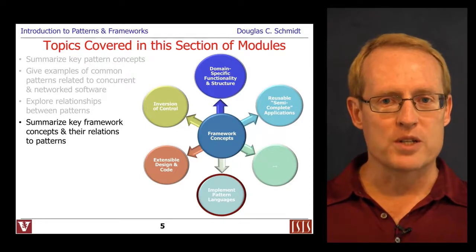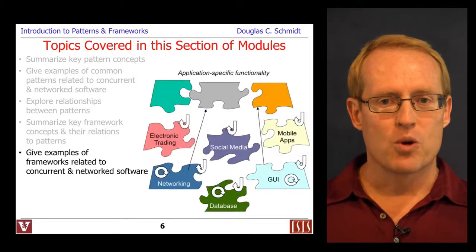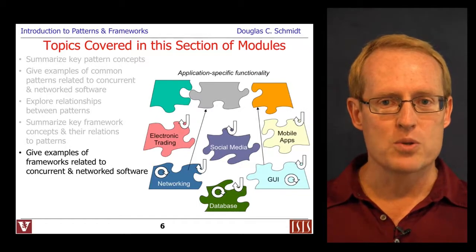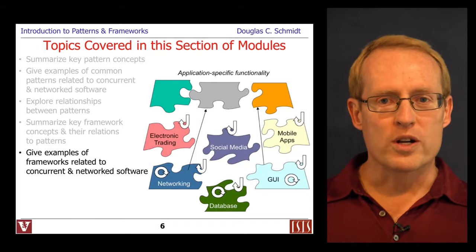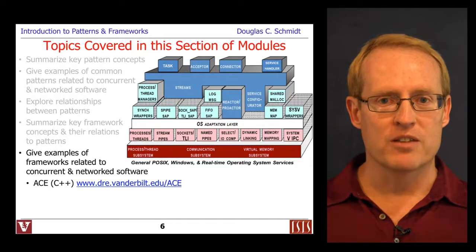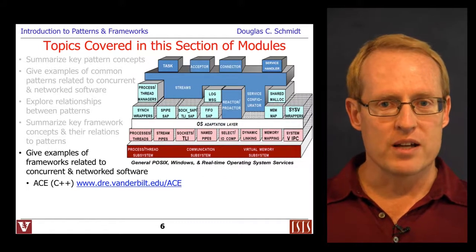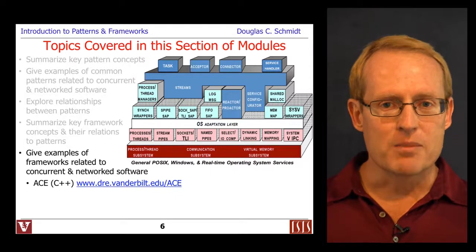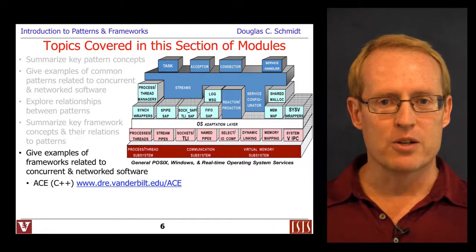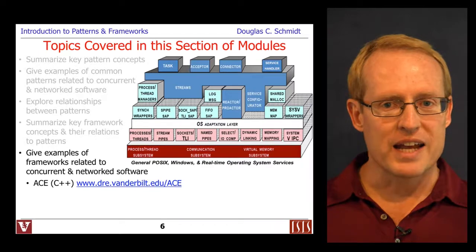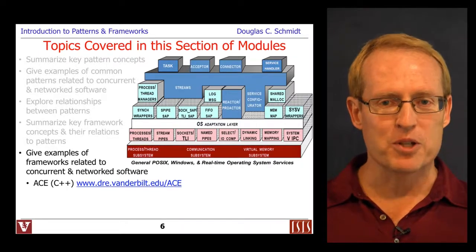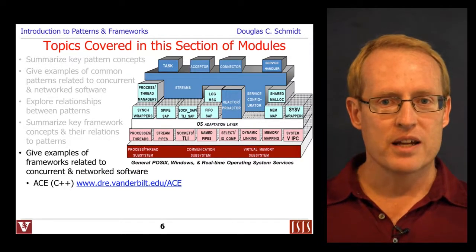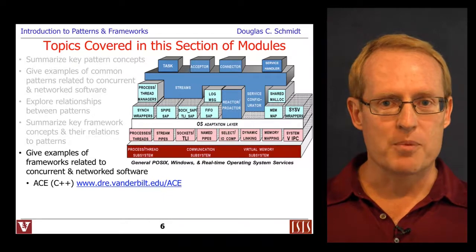In this course, we're going to do more than just talk about concepts. We're also going to talk about a number of examples of industrial-strength frameworks used for concurrent and network software. We'll start by focusing on the Adaptive Communication Environment, or ACE, which is a set of C++ frameworks developed by myself and my colleagues over the past 20 years. Some of the frameworks ACE provides include frameworks for synchronous and asynchronous event handling, connection establishment, service initialization and configuration, concurrency and synchronization, as well as the composition of layered services.